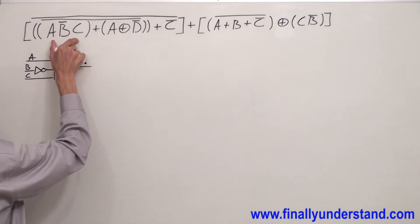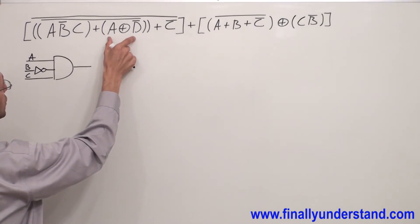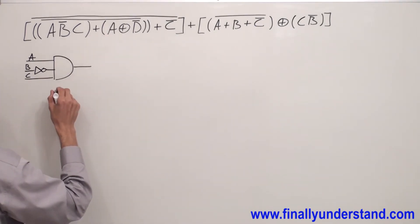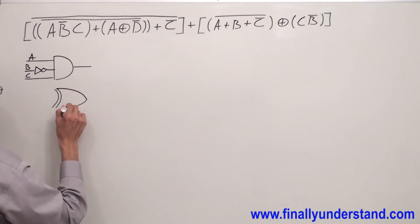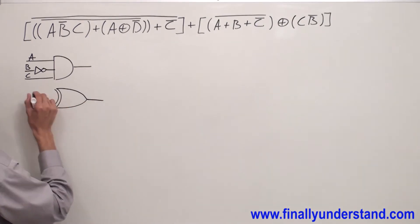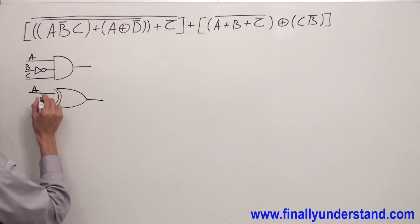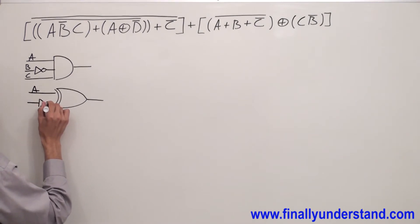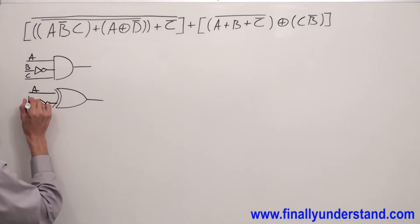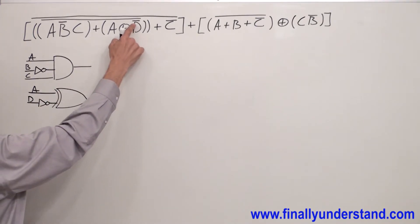This gate is OR with an exclusive OR gate. So I have an exclusive OR gate which has inputs A and D̄. That's why I have an inverter, because I have D̄.